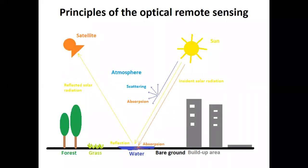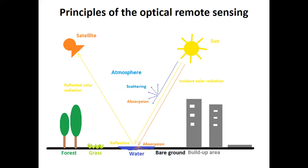Here is a brief explanation of how modern optical satellites work. Sunlight passes through the atmosphere of our planet, and some part of that light is absorbed while going through the atmosphere. Another part is scattered — mainly blue light in the visible part of the spectrum — because of dust, small particles, and aerosols present in the atmosphere. This is why we see our skies as blue.